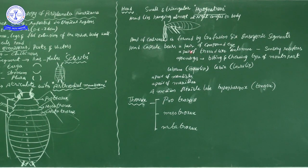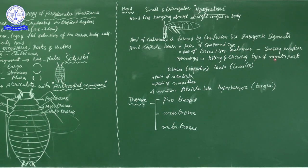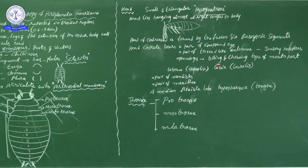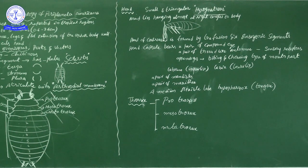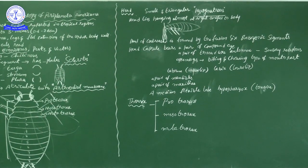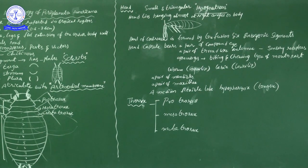To summarize the head part: the head is small, triangular, and hypognathous — hanging at a right angle to the body. It is formed by the fusion of six embryonic segments forming the head capsule. The head capsule bears a pair of compound eyes for vision, a pair of thread-like antennae for sensing smell, and mouth parts including labrum, labia, mandibles, maxillae, and hypopharynx — a tongue-like structure.